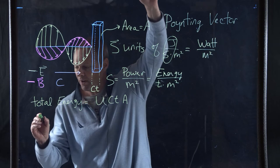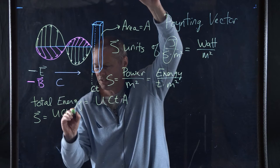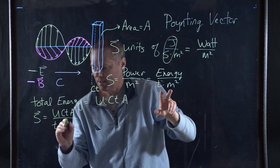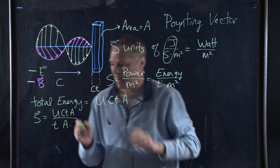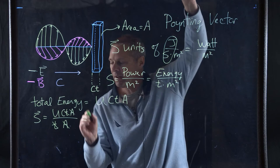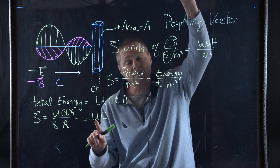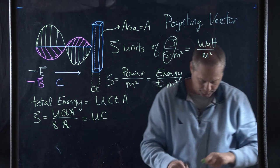Therefore, our S is going to be equal to our total energy U, CT, all upon A, divided by now our T, and this becomes our A. Remember, the meter squared is still going to be an A. We could just erase that as an A. And what happens is our T cancels, our A cancels with up above. Therefore, our Poynting vector is really U times C. So whatever our U is, which is our energy, times the speed of light.